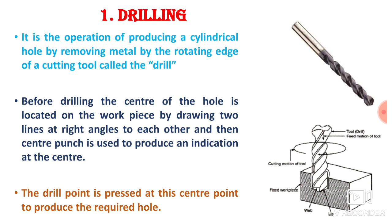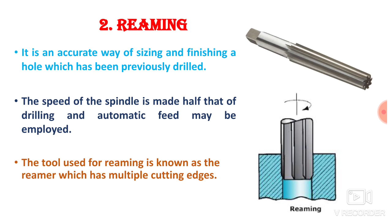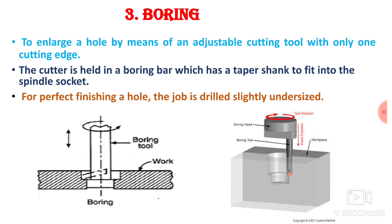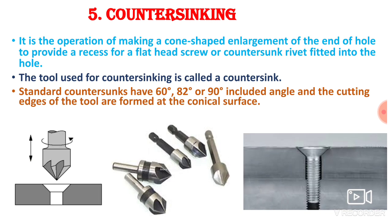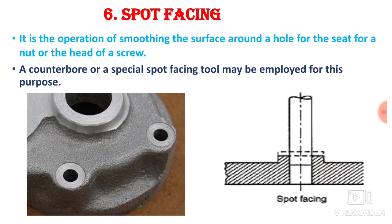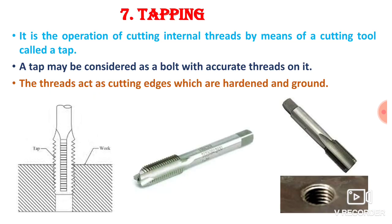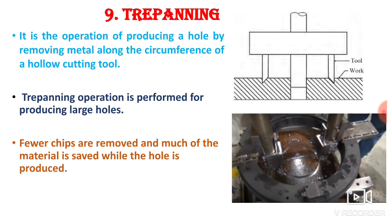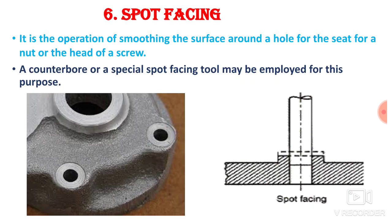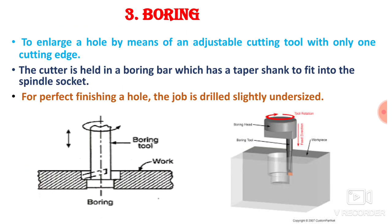Now we will discuss one by one the possible operations that we can perform on the drilling machine: first, drilling; second, reaming; third, boring; fourth, counter boring; fifth, counter sinking; sixth, spot facing; seventh, tapping; eighth, lapping; and ninth, trepanning. These are the possible operations which we can perform on the drilling machine.